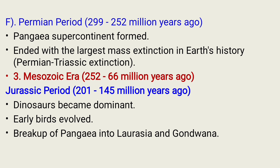During the Jurassic Period, the events recorded in history were: one, the dominance of dinosaurs; two, the evolution of early birds; and three, the breakup of Pangaea into Laurasia and Gondwana land.